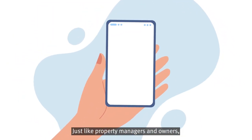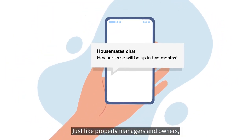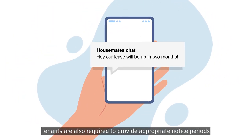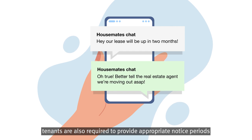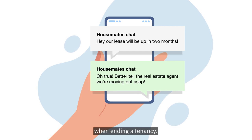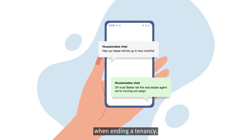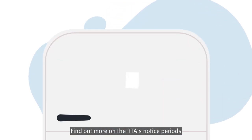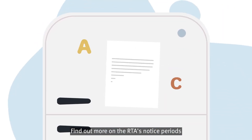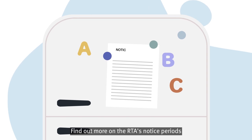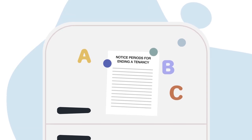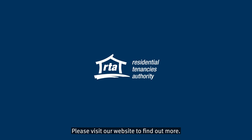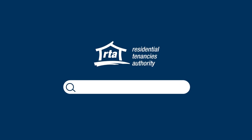Just like property managers and owners, tenants are also required to provide appropriate notice periods when ending a tenancy. Find out more on the RTA's Notice Periods for Ending a Tenancy webpage. Please visit our website to find out more.